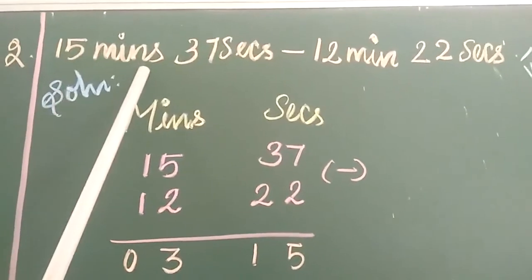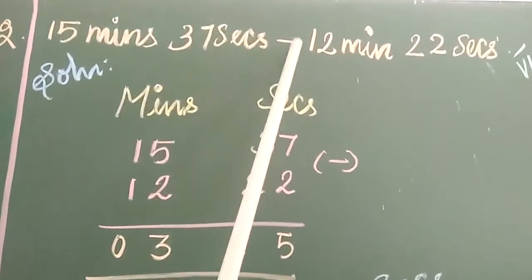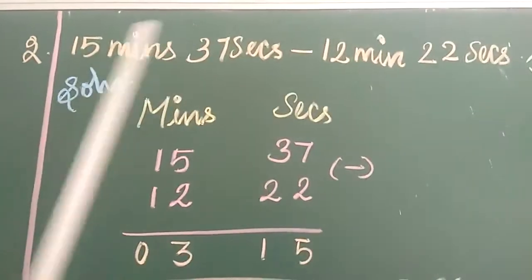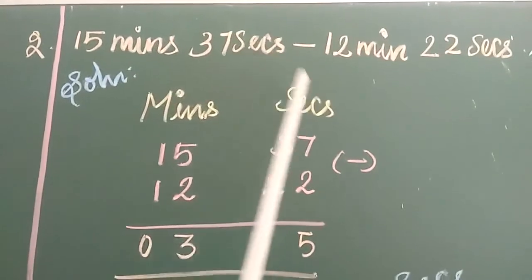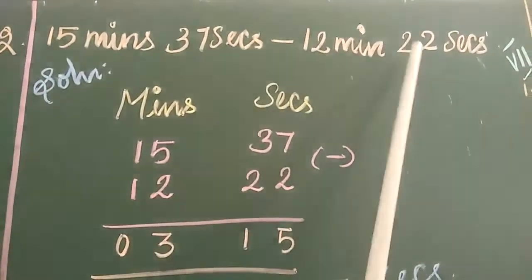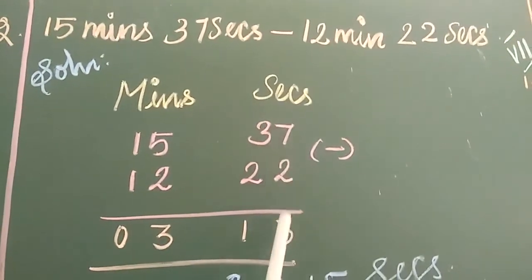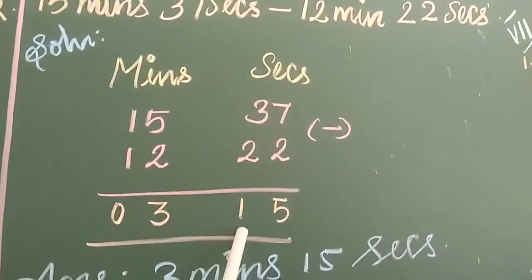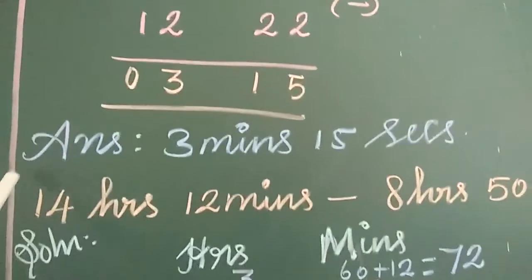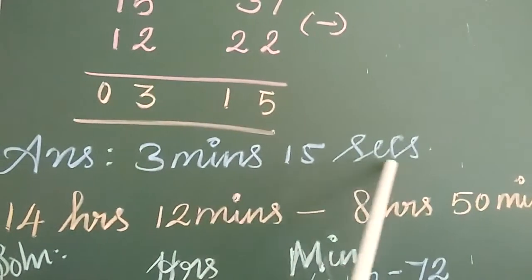So the final answer is 11 hours 55 minutes 13 seconds. The second one: 15 minutes 37 seconds subtract minus 12 minutes 22 seconds. Solution: First heading, minutes and seconds. 15, 37. 12, 22. Let's do the subtraction. 7 minus 2, 5. 3 minus 2, 1. 5 minus 2, 3. 1 minus 1, 0. So the answer is 3 minutes 15 seconds.